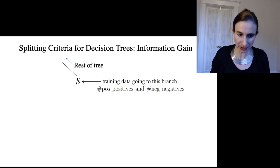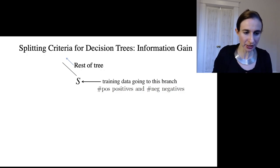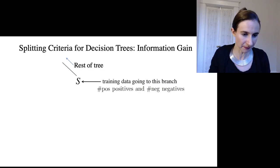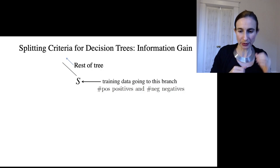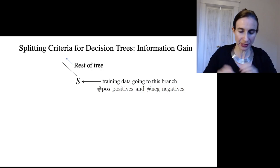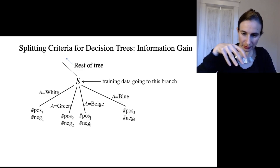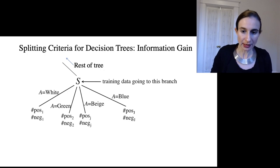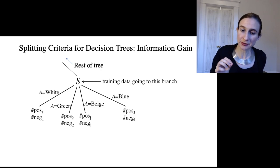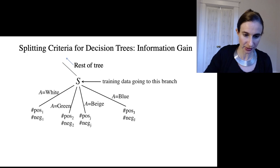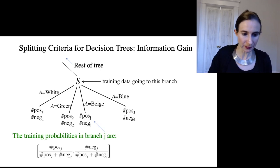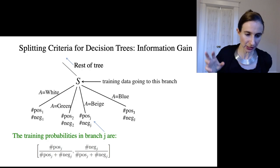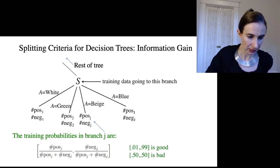So I want to talk about the splitting criteria that's used in some of the decision tree algorithms, and it's called information gain. So what I've illustrated here is that we are at a specific node in the tree—the rest of the tree is up there somewhere. We're going to consider the training data going to that branch. I've indicated the number of positives and the number of negatives that go into the branch. And then if I split on this feature called A, which happens to be a color feature, there's the notation for the number of positives and the number of negatives in each of the branches.